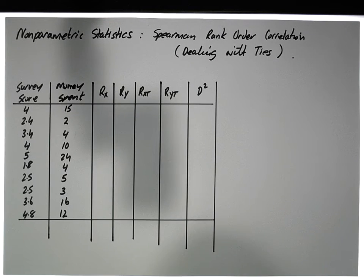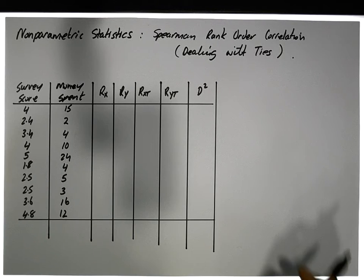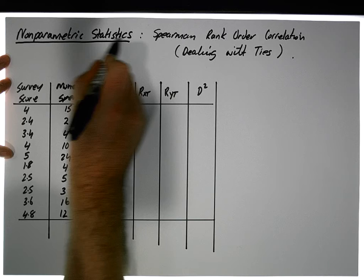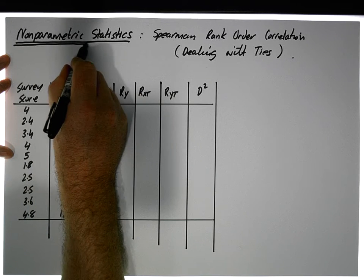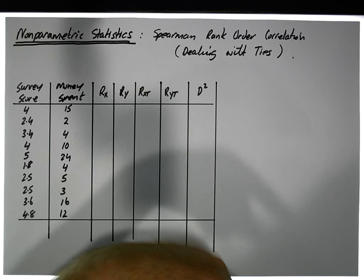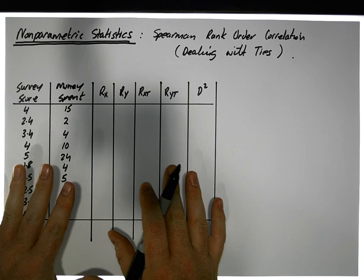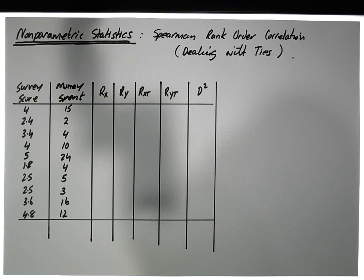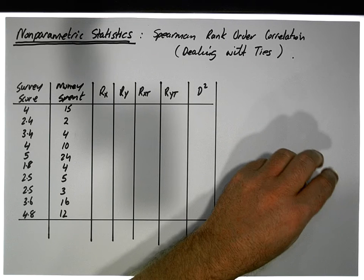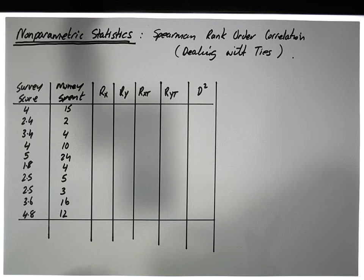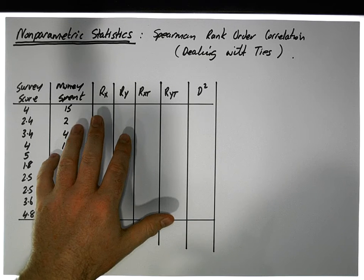Hi guys, this is Jonathan Lambert with the Mathematics Development and Support Service at National College of Ireland. In this short video, another in our series dealing with non-parametric statistics, we're going to concentrate on what's known as the Spearman rank order correlation. I've done a video on this before — that was the naive approach, where we didn't modify our correlation formulas to take into consideration any ties in the data.